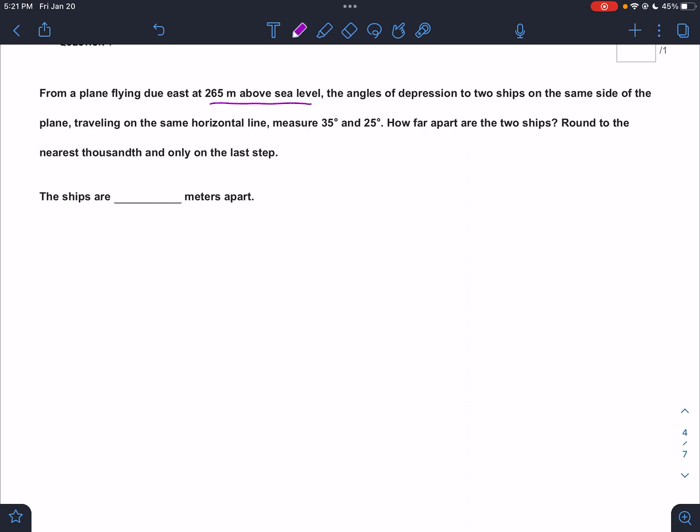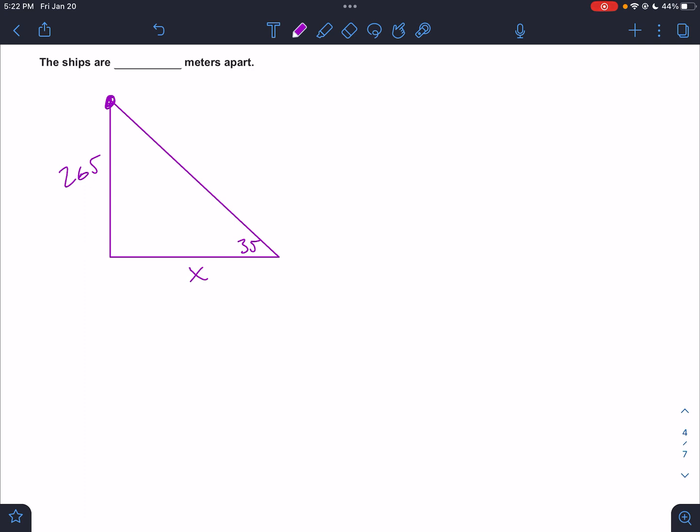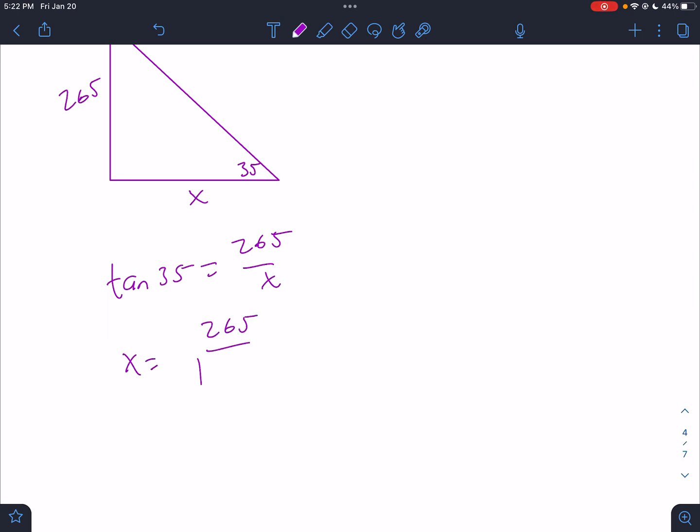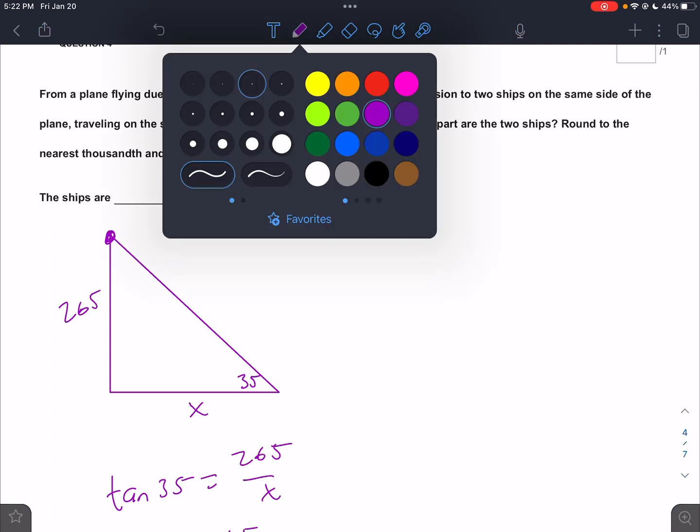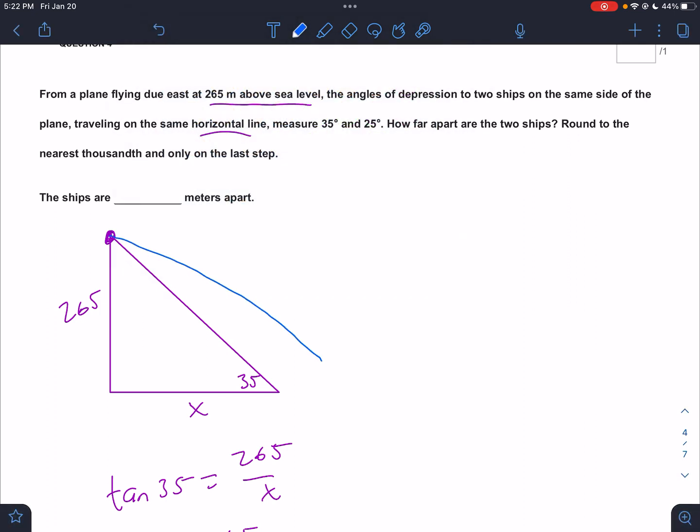So I'm going to use elevation. I think it's a little bit easier to understand. So we have a right triangle here and we have an angle of elevation. I'm going to put the bigger number closer. Remember, we've talked about that in class. So it's 265 and that would be X. So the distance, the horizontal distance to the first ship is X. So that would be the tangent of 35 equals 265 over X. So X is 265 divided by the tangent of 35. That's how far away, horizontally, the first ship is.